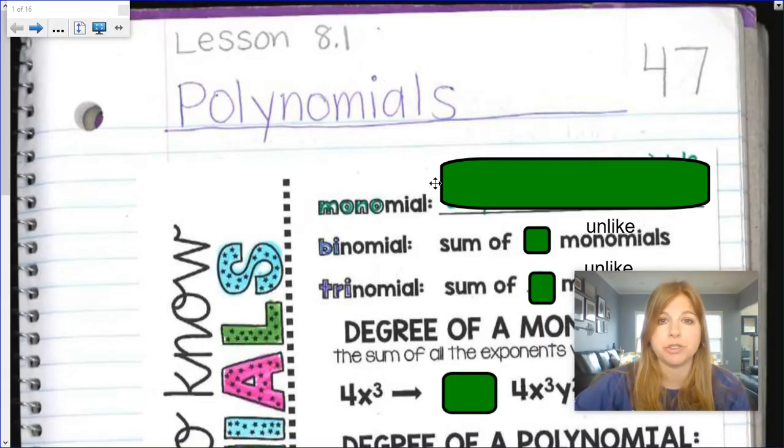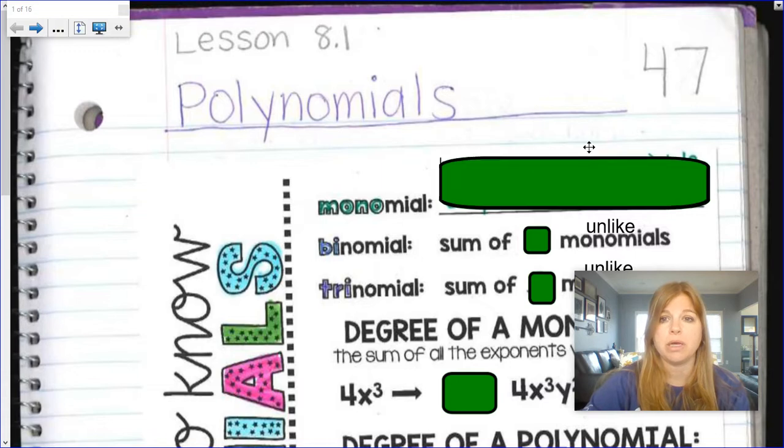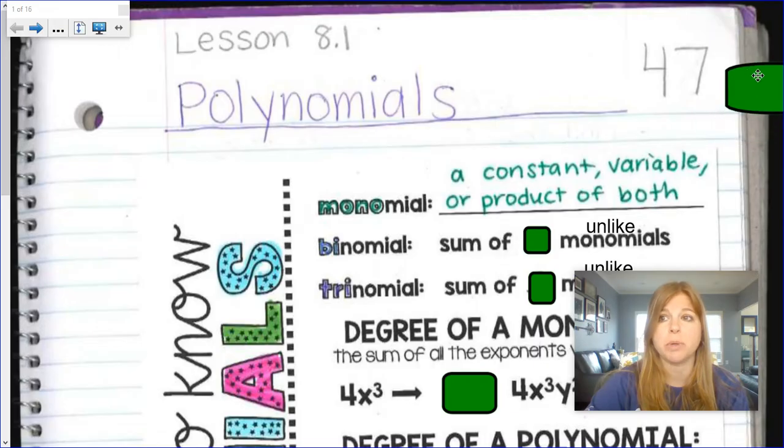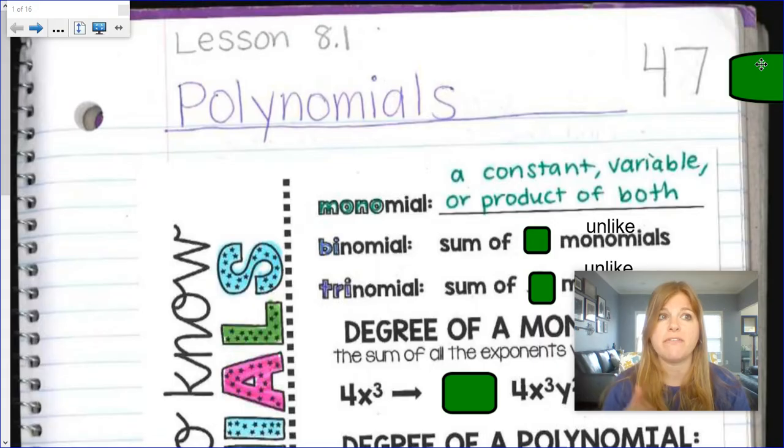First thing we need to make sure we all know is what the basic definition of a monomial is. A monomial is a polynomial made up of just a constant, a variable, or the product of both. So 5 is a monomial, x is a monomial, 5x is a monomial.